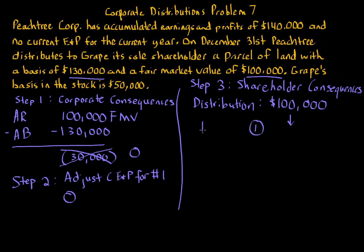Now we go through the three-part waterfall. The first stop is dividend — a distribution is a dividend to the extent of earnings and profits. Accumulated E&P is $140,000 and current E&P adjusted after step two is zero, so total E&P is $140,000. We only have one distribution of $100,000. Since the distribution amount of $100,000 is less than the E&P of $140,000, all of the distribution is considered a dividend.